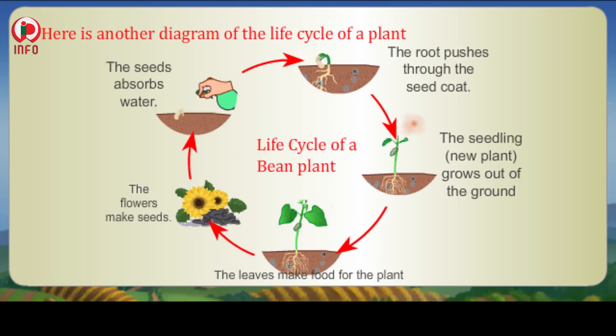Here is another diagram of the life cycle of a plant: The seed absorbs water. The root pushes through the seed coat. The seedling grows out of the ground. The leaves make food for the plant. The stem and leaves grow toward the sunlight. The flower makes seeds. The seeds are scattered, ready to grow.